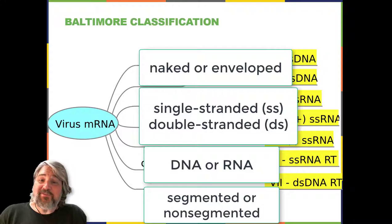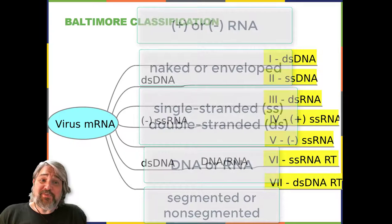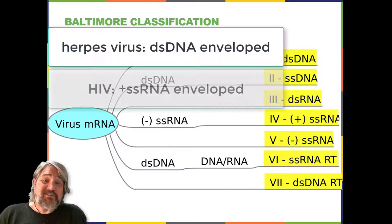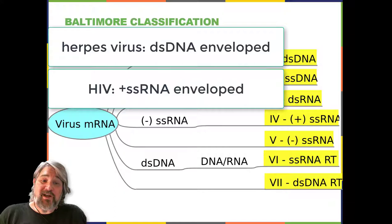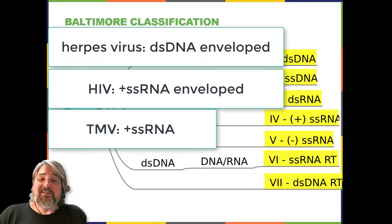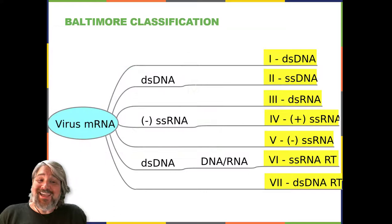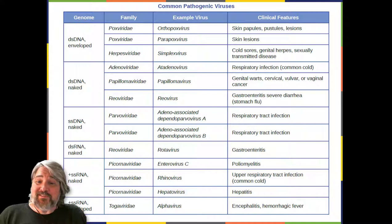For example, herpesvirus can be classified as a double-stranded DNA enveloped virus; human immunodeficiency virus, HIV, is a plus single-stranded RNA enveloped virus; and tobacco mosaic virus is a plus single-stranded RNA virus. Other characteristics such as host specificity, tissue specificity, capsid shape, and special genes or enzymes may also be used to describe groups of similar viruses. Here is a list of some of the most common viruses that are human pathogens by genome type.